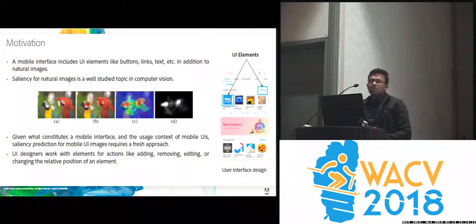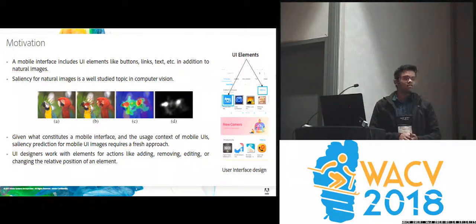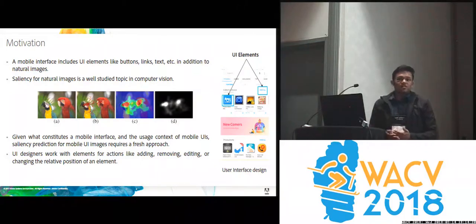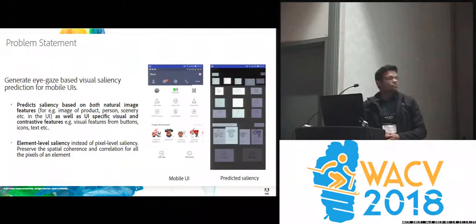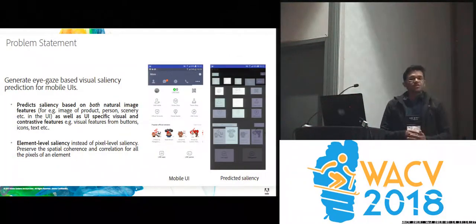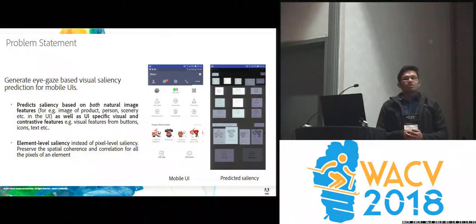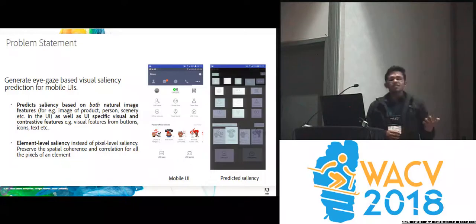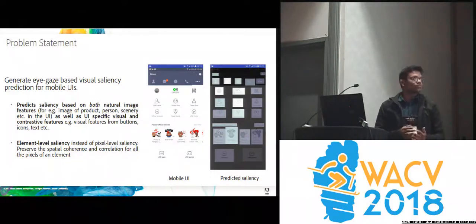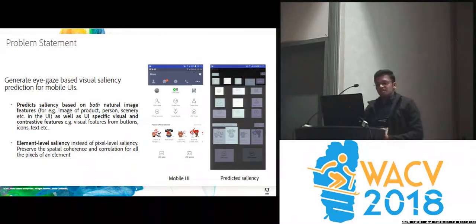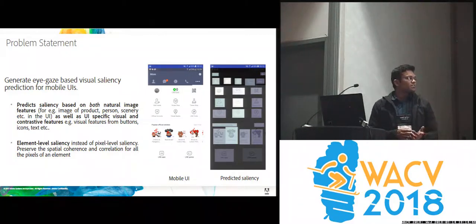UI designers normally work with UI elements for actions like adding, removing, editing, etc. We want to provide visual feedback to these designers for making better designs. We want to address the problem of generating eye gaze-based saliency prediction for mobile user interfaces, where the saliency prediction should be based on both natural image features as well as UI-specific features. We want to predict element-level saliency instead of pixel-level saliency, as shown in the right image.